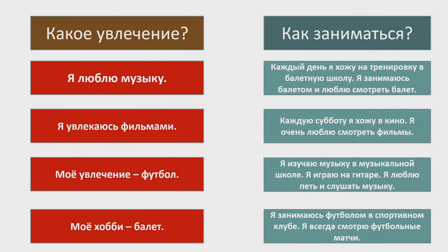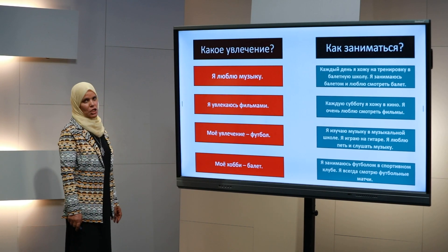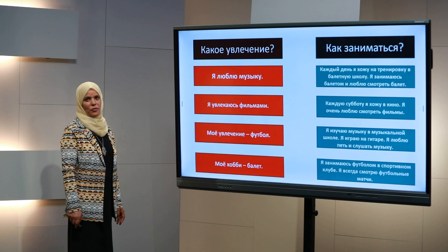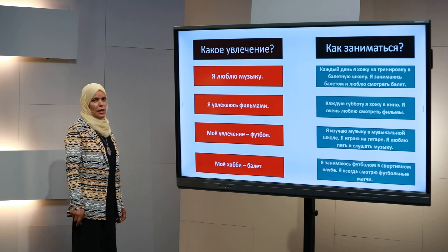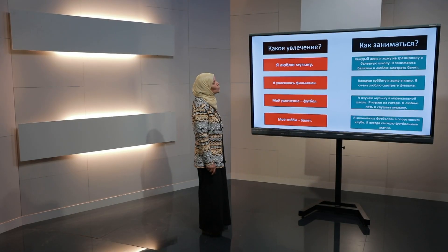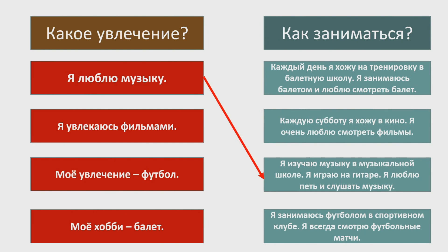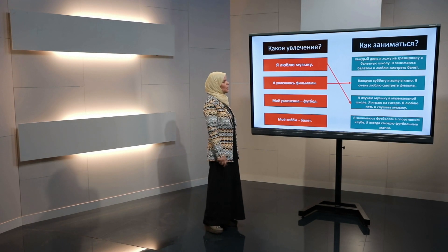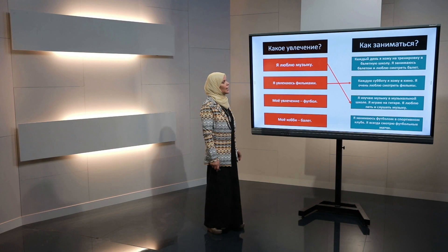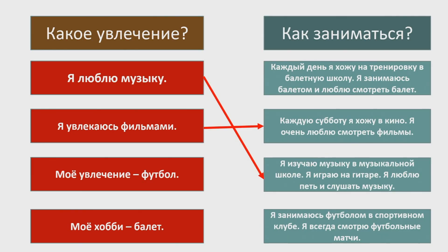Давайте ответим на вопрос, какое увлечение, как заниматься. Я люблю музыку — то есть я изучаю музыку в музыкальной школе, я играю на гитаре, я люблю петь и слушать музыку. А я увлекаюсь фильмами — значит, каждую субботу я хожу в кино, я очень люблю смотреть фильмы. Моё увлечение — это футбол.